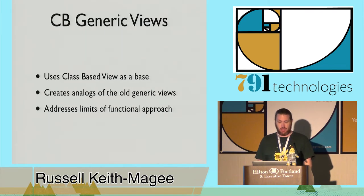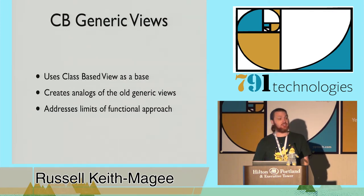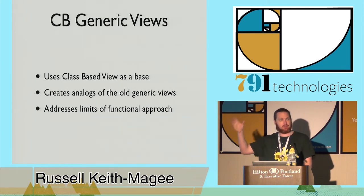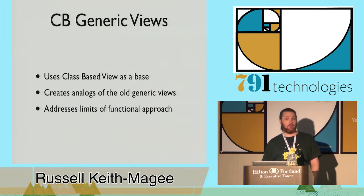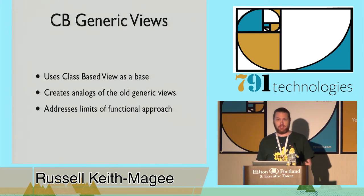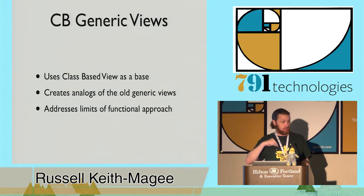Layered on top of class-based views are class-based generic views. These use the class-based view as a base and create analogues of all the old function-based generic views in class-based form. Along the way, they address the limitations of the functional approach - you can have injection points and extension points using subclassing, mix-ins, and object orientation, without having to invent class-based behavior by passing in callables or more keyword arguments. The catch is that by addressing those limitations, you introduce a whole new body of knowledge you need to understand the class structure.